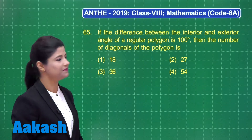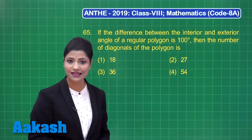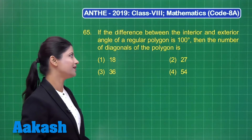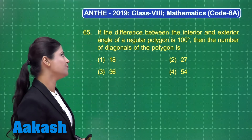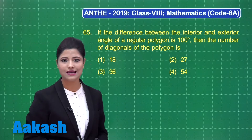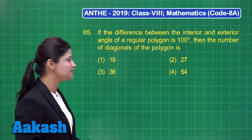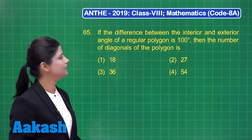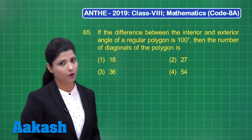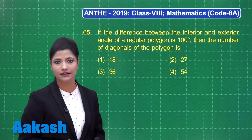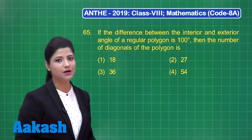Let us take up our next question. This question states: if the difference between the interior and exterior angle of a regular polygon is 100 degrees, then the number of diagonals of the polygon is — out of these 4 options: 18, 27, 36 and 54. We can obtain the number of diagonals of an n-sided polygon using the formula n(n−3)/2.